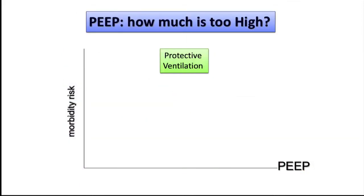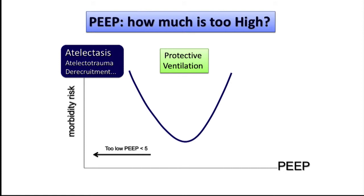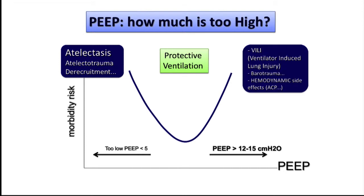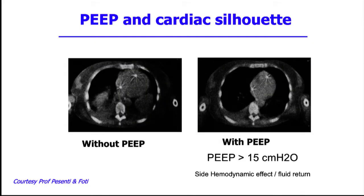Professor Emmanuel Futier showed that too much low PEEP is not good, and too much high PEEP is not good — a U-shaped curve. But what is the middle of the curve? How do you set PEEP between too low and too high? Professor Futier called this area the 'protective ventilation area,' probably between 5 to 15 cmH2O. You have side effects of high PEEP — you cannot use high PEEP for everybody.